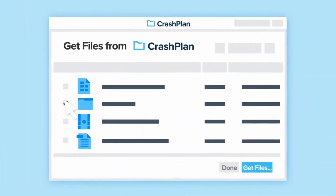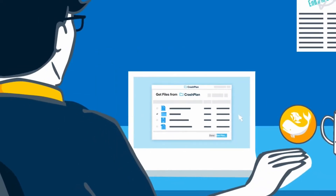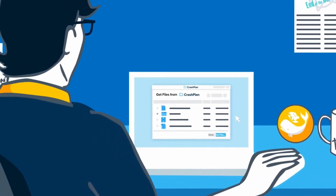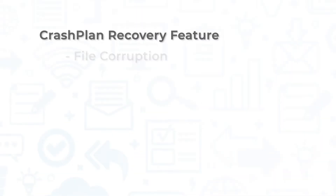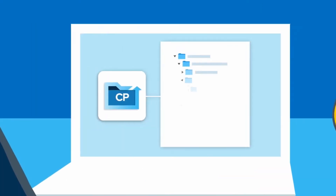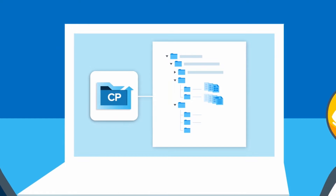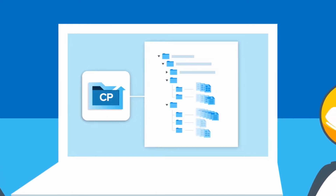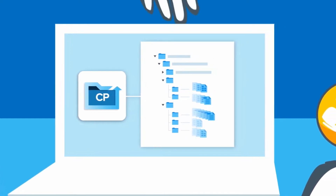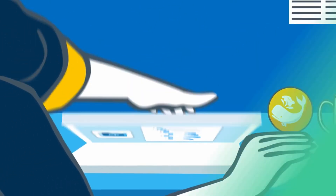CrashPlan's recovery feature allows users to recover one or all files from a device in minutes in the event of a file corruption, device failure, site disaster, or human error. It provides flexible restore options that let administrators push download drives to devices or enables users to initiate their own restores using the app.